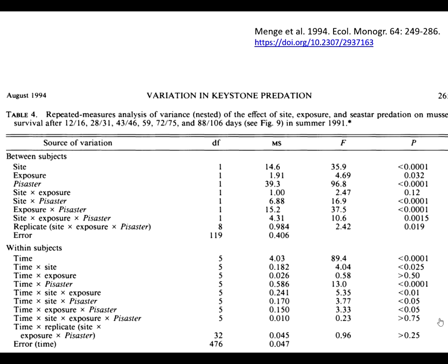Back to the sea star and mussel example: this table shows interactions from only three factors — site, exposure, and sea stars — but it is still difficult to interpret.